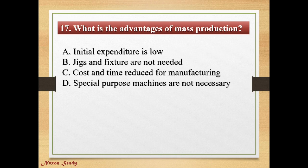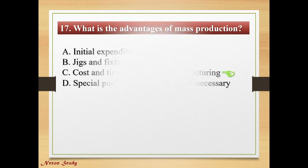Question: What is the advantage of mass production? Options: initial expenditure is low, jig and fixture are not needed, cost and time reduced for manufacturing, special purpose machines are not necessary. Correct answer is cost and time reduced for manufacturing.